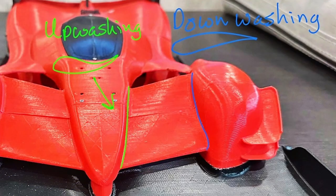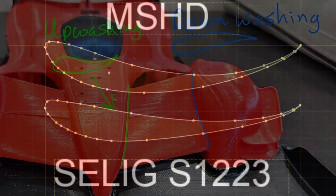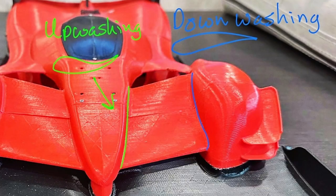The wing that connects the nose to the fender serves as the second element of the front wing. It consists of one airfoil oriented two different ways. This airfoil is called the motorsports high downforce airfoil and it's designed specifically for race cars.